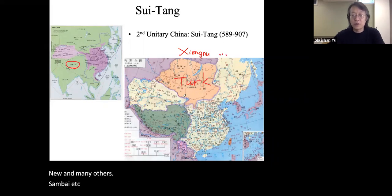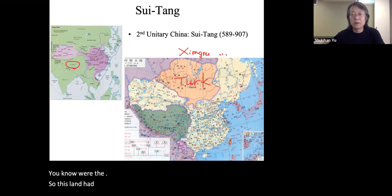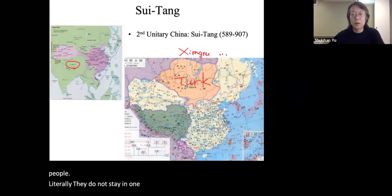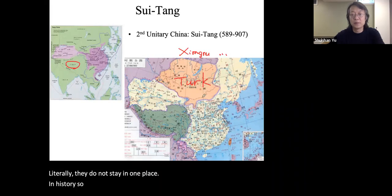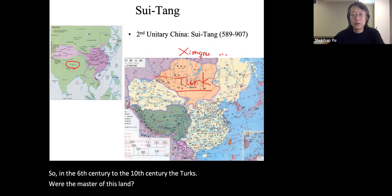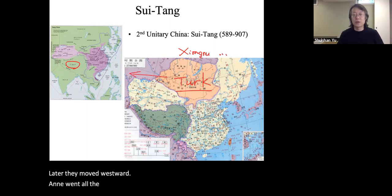After the Turks came the Mongols. Nomadic peoples had occupied this land—they do not stay in one place but migrate. In the sixth to tenth century, the Turks were the masters of this land; later they moved westward, going all the way to today's Turkey, with some remaining in Central Asia.